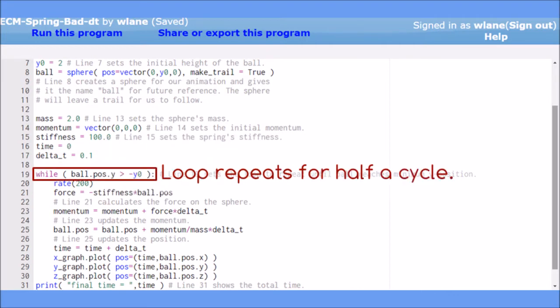We've also changed the while loop in line 19. Instead of checking for a certain value of time, the loop now repeats as long as the ball hasn't reached the bottom of its motion. This means that when we run the code, the animation will stop once the ball has completed half a complete period of motion.